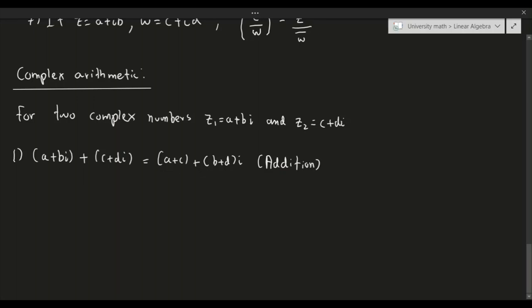Subtraction: (a + bi) - (c + di) = (a - c) + (b - d)i. So we just subtract the real components and subtract the imaginary components.